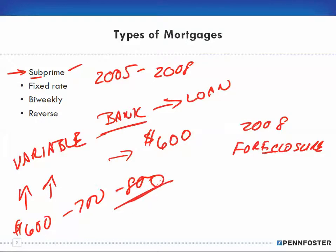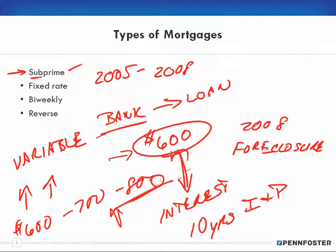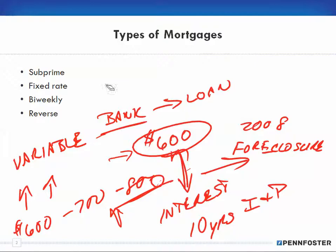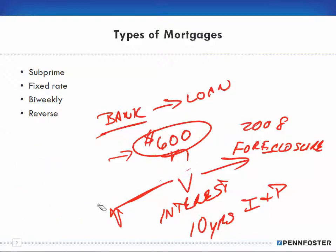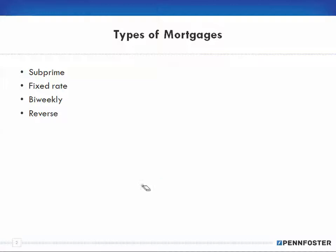On top of that, many people were only paying interest — the full $600 was just interest. Then 10 years later, they were required to pay both interest and principal. If someone could only afford $600 and that was all interest, where were they going to get money for the principal? They couldn't, and so many people went into foreclosure.